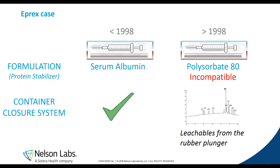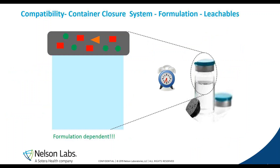What can we learn from the Eprex case? Leachables are formulation dependent. Leachables are compounds that are present in the packaging — for example, in a rubber stopper closing a glass vial — that can migrate over time into the drug formulation. This leaching process is, as we learned from the Eprex case, formulation dependent, but also a time-dependent process.